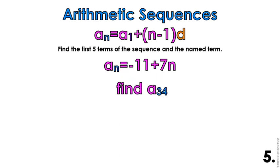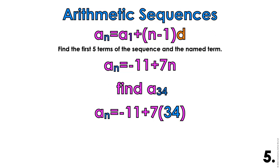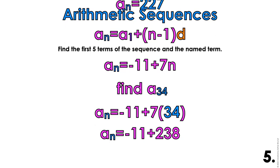It also asked us to find the named term — find a sub 34. I'll take the formula and put 34 in for n. So 7 times 34 gives me 238, and negative 11 plus 238 gives me 227. So a sub 34 equals 227.